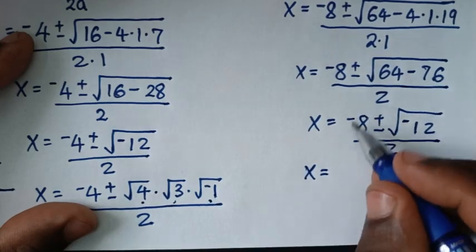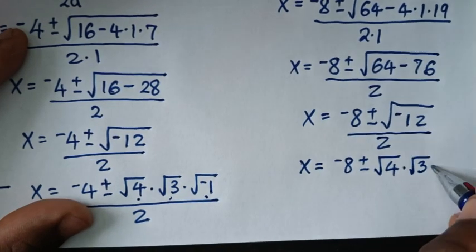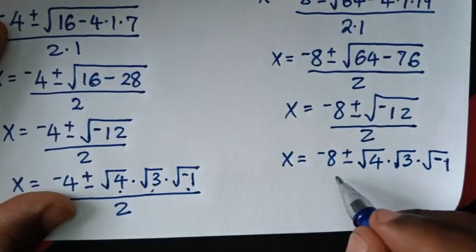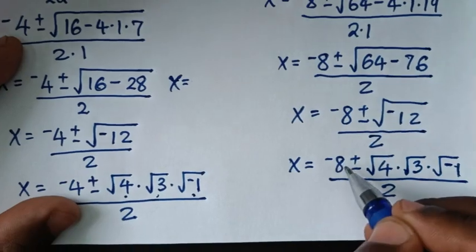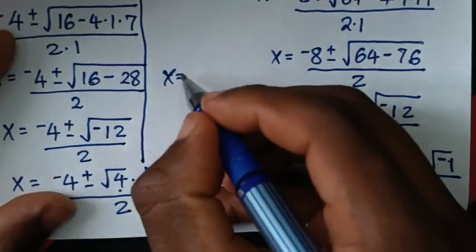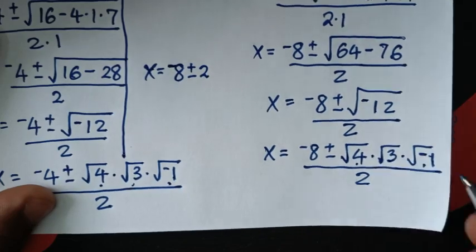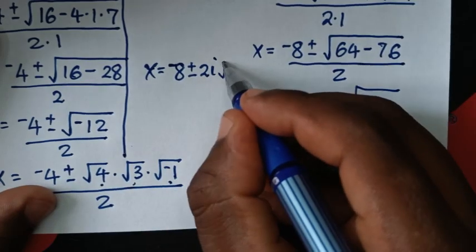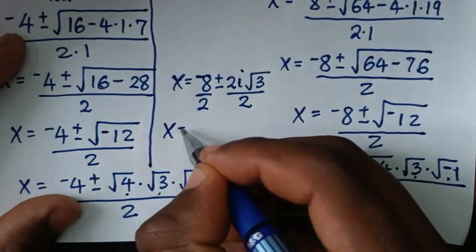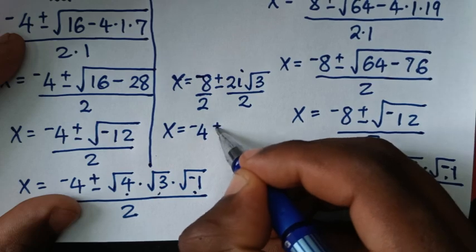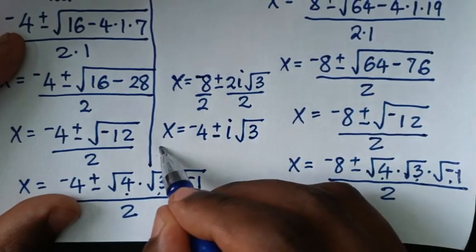√(−12) is the same as √4 × √3 × √(−1). So x = (−8 ± 2i√3) / 2, which gives x = −4 ± i√3. From here we have two more complex solutions.